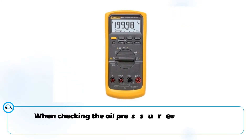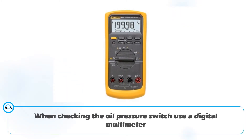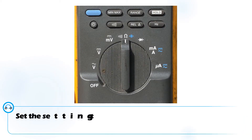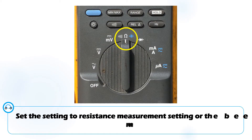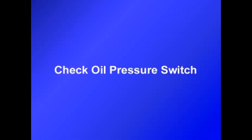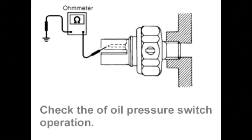How to check the oil pressure switch: use a multimeter and set it to the resistance measurement setting or the beep mode setting. Check the oil pressure switch using the tester and connect the tester as illustrated.